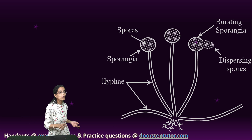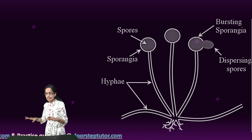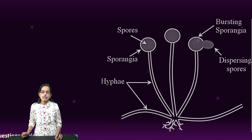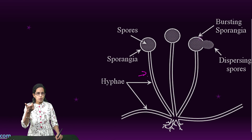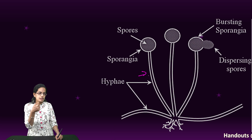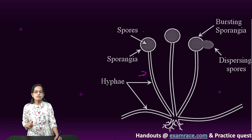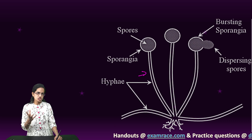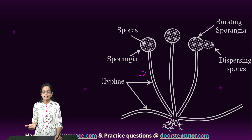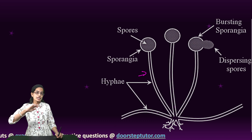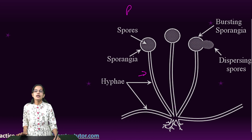Bread mold would develop only in moist conditions, not in dry conditions. Why? Because in dry conditions the hyphae of the spores would fail to develop. Since the hyphae cannot develop, the sporangia cannot develop, and since the sporangia cannot develop, spore formation would not take place. So this happens in a moist bread sample.